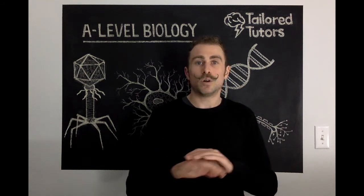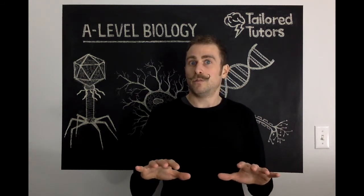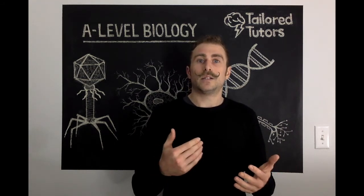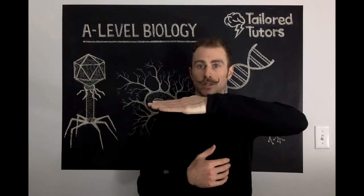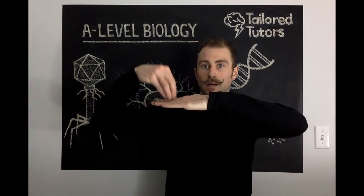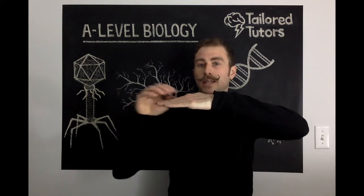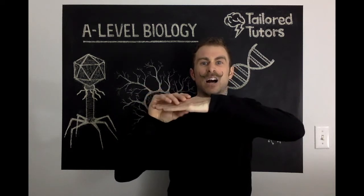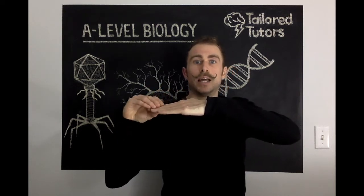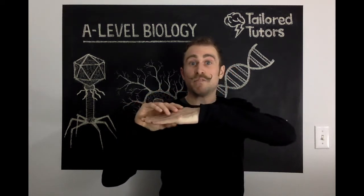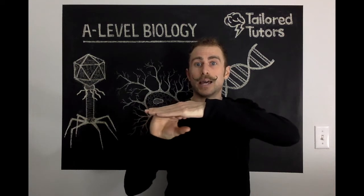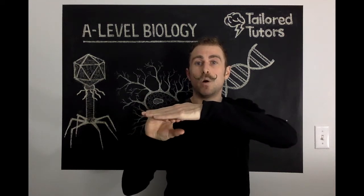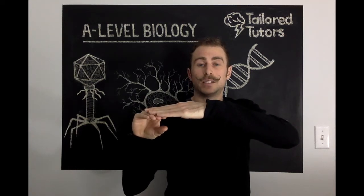How that process works you don't need to know. So let's imagine we've got a root growing horizontally and the light is coming from the top. We can imagine that IAA is broken down by light, so only the IAA is going to be in the lower half — the shaded side.